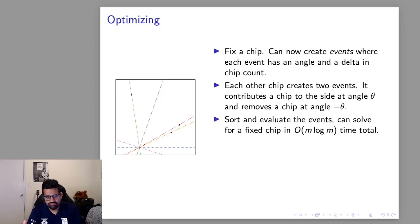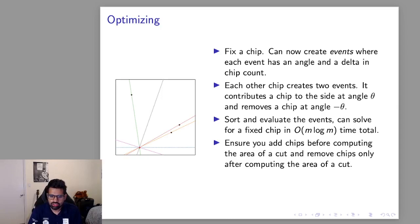Then by sorting all of the events and stepping through them for a fixed chip we can compute the best line that goes through that chip in O(M log M) time. Since there's O(M) chips total the overall runtime is M² log M.